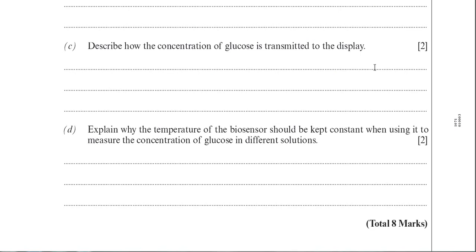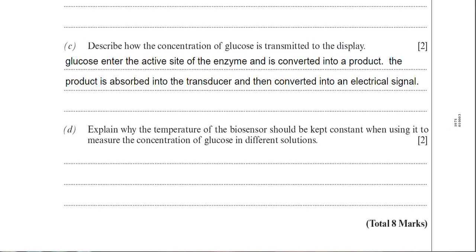That signal is then amplified and displayed as a numerical value on the display. So there's my answer. I've said glucose enters the active site of the enzyme and it's converted into a product. The product is absorbed into the transducer and then converted into an electrical signal. And there are some other options you could have put there as an answer, but we'll discuss those when we look at the mark scheme.